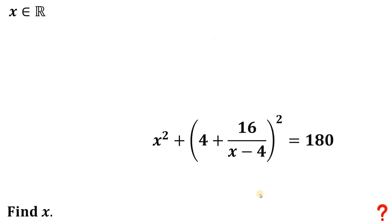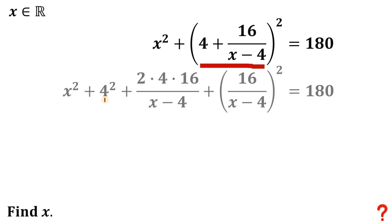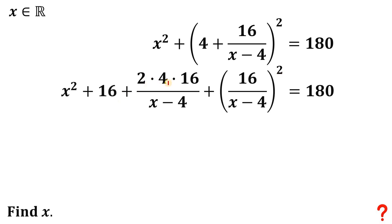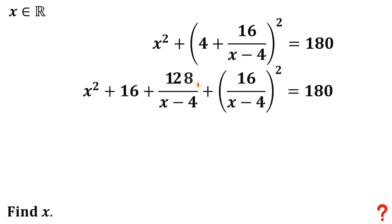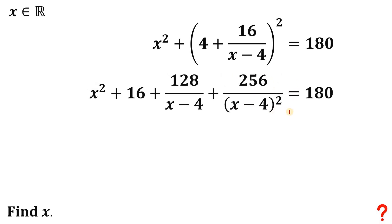Now let's focus on this result and expand the expression inside the parentheses. We have 4 squared — the square of the first term — plus 2 times the first term times the last term, plus the last term raised to the power of 2. Simplifying: 4 squared is 16, 2 times 4 is 8, and 8 times 16 gives 128. And 16 over (x minus 4) squared gives 256 over (x minus 4) squared.